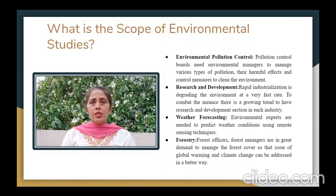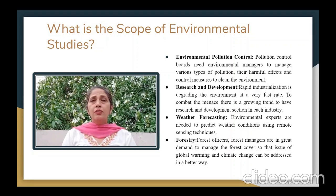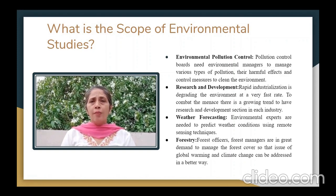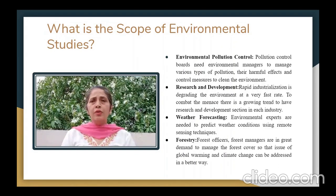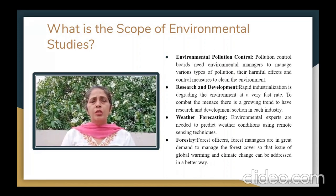Next is weather forecasting. We can predict the weather beforehand because of remote sensing technology, and this prediction helps address various disasters like tsunami, earthquake, floods, and drought in a better way. Beforehand prediction allows warnings to be given to the public, and environmental experts can play a very good role in remote sensing and disaster management.